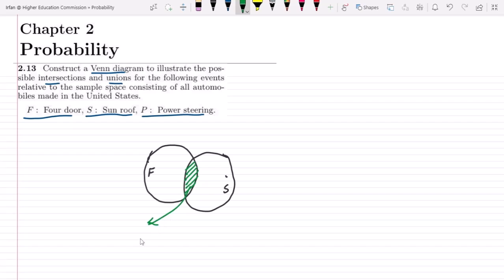Which is F and S - these are all the cars which have four doors and sunroof. Similarly, the last type here is the power steering, so there can also be some cars which are also here. Let me color it as well, this part.